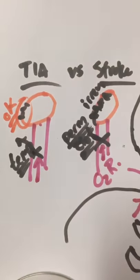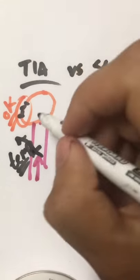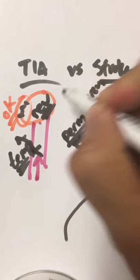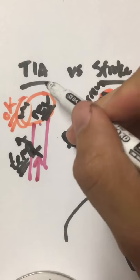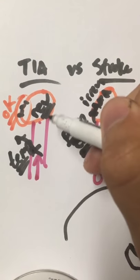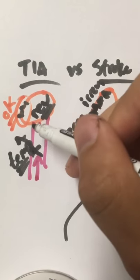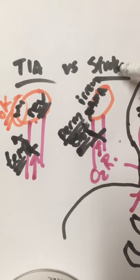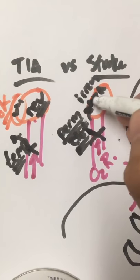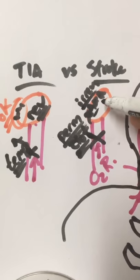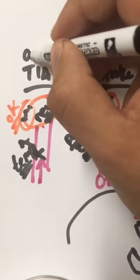So it is reversible. The difference between TIA and stroke is in TIA the damage is reversible because you restore the blood flow fast enough to get the oxygen so the cells don't die, versus an actual stroke or an actual heart attack where the damage is irreversible.